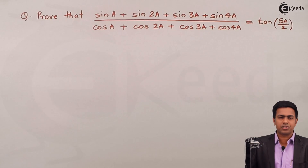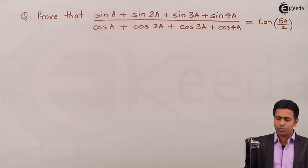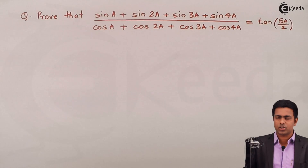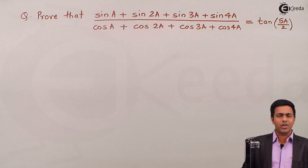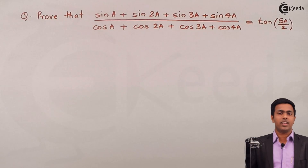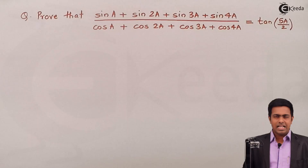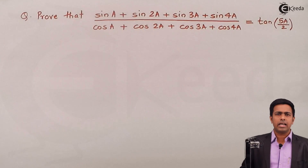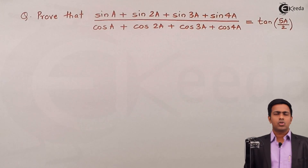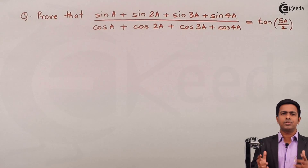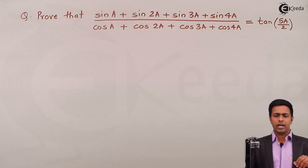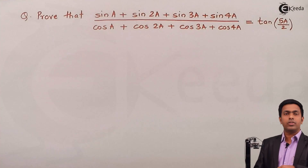In this video we have to prove that sin a + sin 2a + sin 3a + sin 4a, whole upon cos a + cos 2a + cos 3a + cos 4a, is equal to tan of 5a upon 2. To start, we'll work with the left hand side because it has the maximum number of terms, and we'll reduce them to prove it equals tan(5a/2).